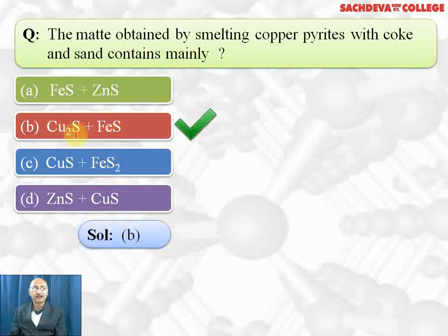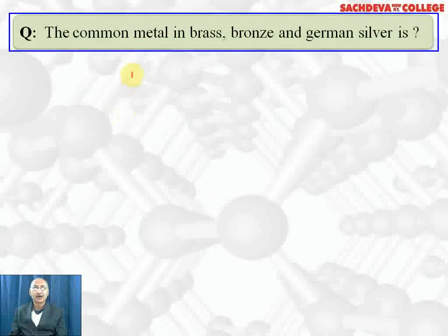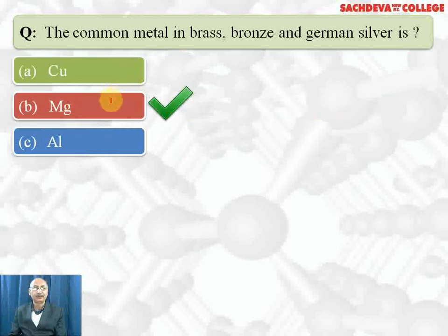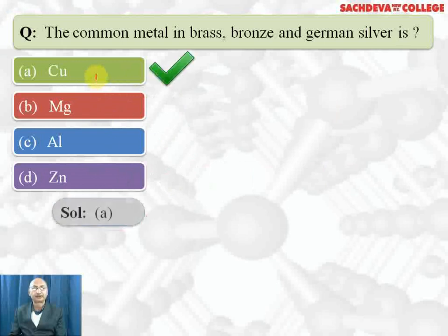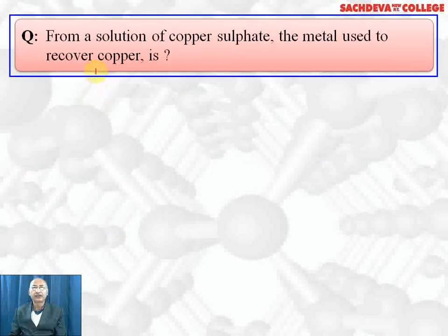The common metal in brass, bronze, and silver is copper. Correct answer is copper. Next, from a solution of copper sulfate, a metal used to recover copper is sodium, silver, mercury, or iron.